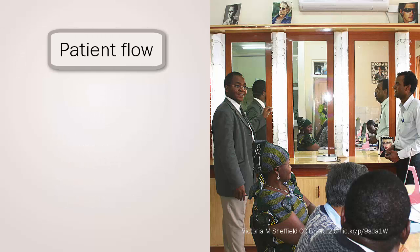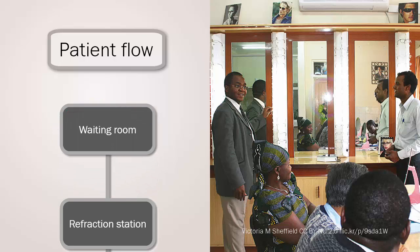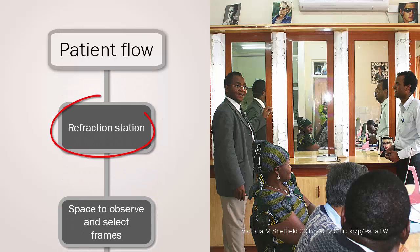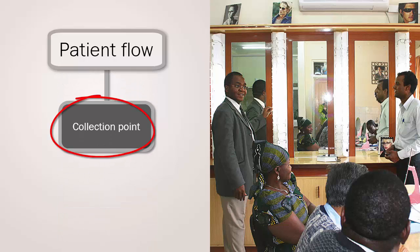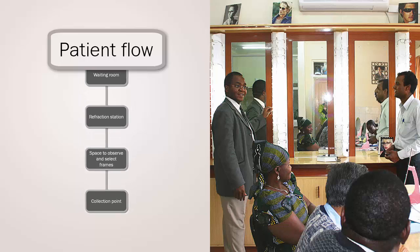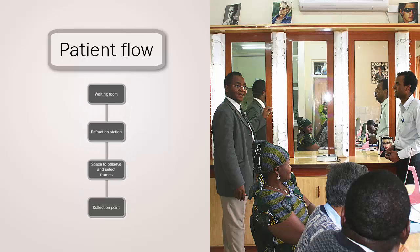Setting up an efficient service requires a smooth patient flow system, and this will include a waiting room, a refraction station including a dark space for refraction, a space for patients to observe and select frames, and finally a collection point for the spectacles.